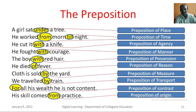Cloth is sold by the yard — here, by is a preposition of measure. We travelled by train — here, by is a preposition of transport. For all his wealth he is not content — here, for is a preposition of contrast. His skills come from practice — here, from is a preposition of origin.